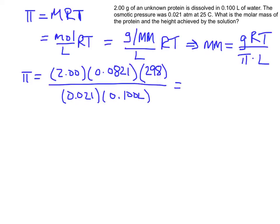And when we crunch the numbers here, I get 2.33 times 10 to the fourth grams per mole. And now you're probably thinking, wow, that's pretty big. And I guess it is, but also it's a protein. So the molar mass can be pretty large. So that kind of makes some sense.